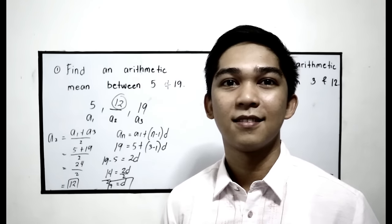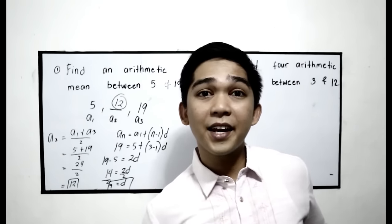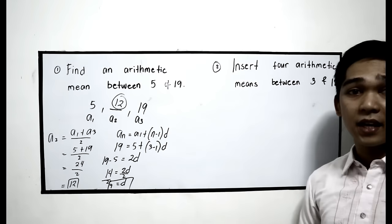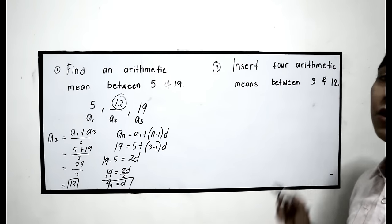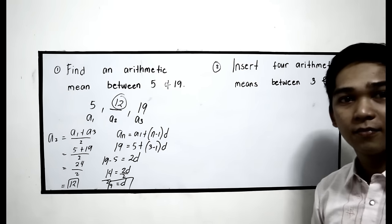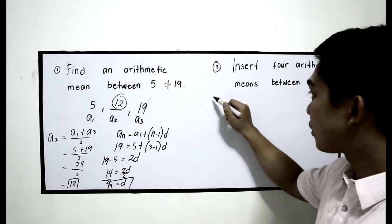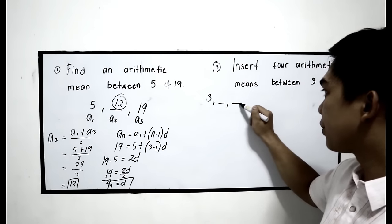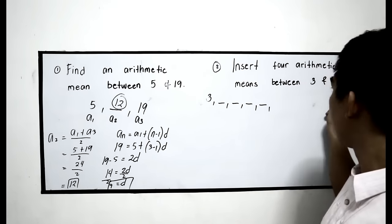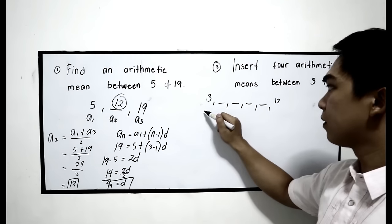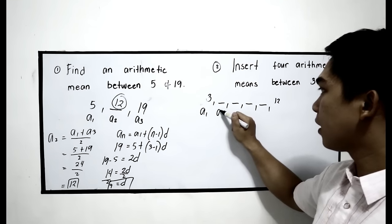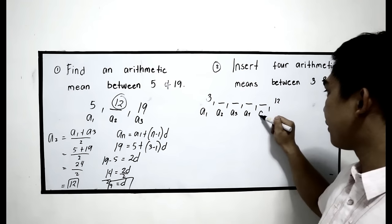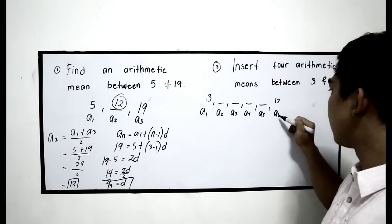Second example: insert 4 arithmetic means between 3 and 12. Illustrate: a1 will be 3, then 4 means, then 12. This will be a1, a2, a3, a4, a5, and a6.